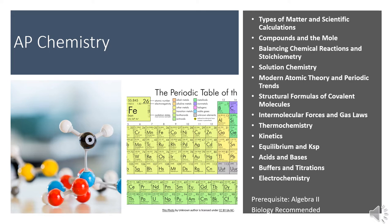AP Chemistry and the Associated Lab is a daily course equivalent to the first year of college level introductory chemistry. Instruction is focused on conceptual understanding that allows students to develop the scientific reasoning skills necessary for designing and planning data collection, analysis, applying mathematical routines, and making connections across concepts.